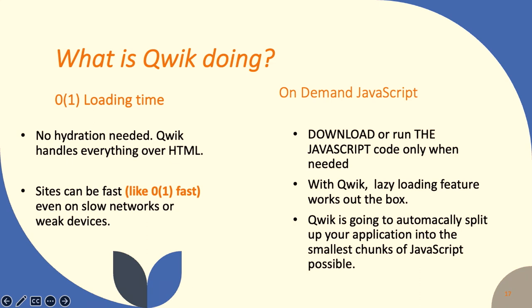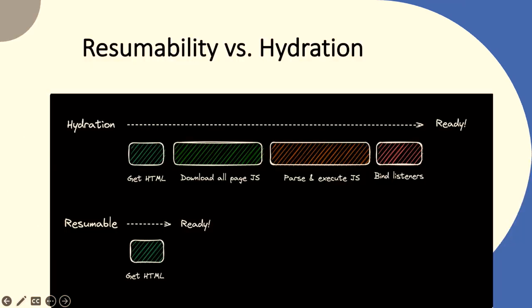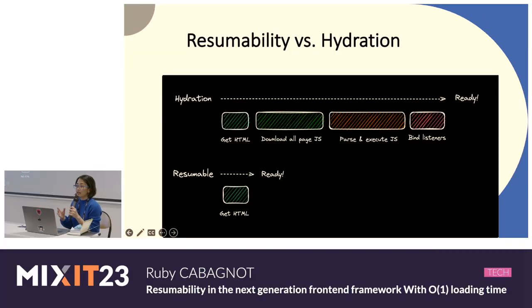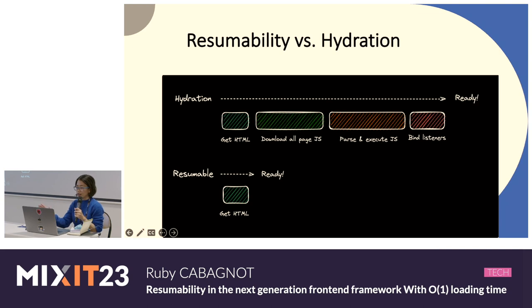To recap: Qwik doesn't use hydration. Instead it uses resumability, so the page can become interactive without downloading and executing JavaScript on the client. JavaScript is not executed on page load, so the page load is basically instant. Since Qwik serializes everything into HTML — both framework state, application state, and event listeners — it can essentially resume execution instantaneously exactly where the server left off. In contrast with other SSR or SSG frameworks, there's no need to replay all application logic or download a bunch of JavaScript.